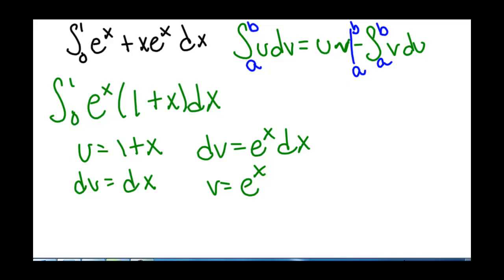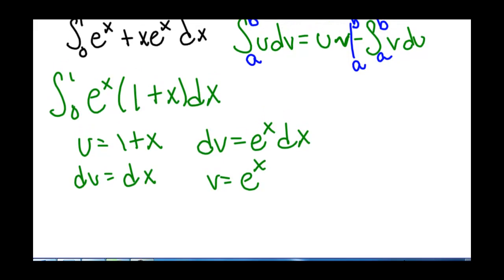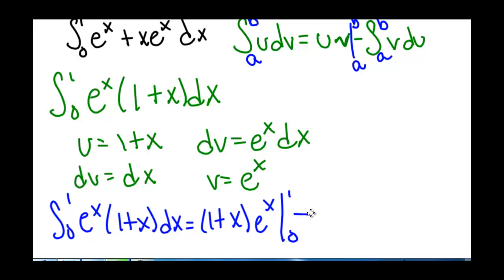So now we have that the integral from 0 to 1 of e to the x times the quantity 1 plus x dx equals u times v. So 1 plus x times e to the x evaluated from 0 to 1 minus the integral of e to the x times du, which is dx, from 0 to 1.